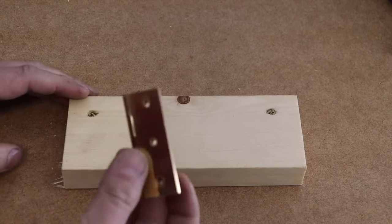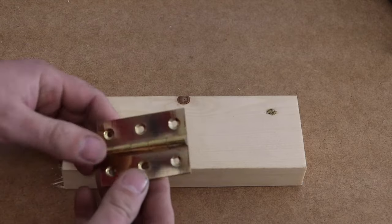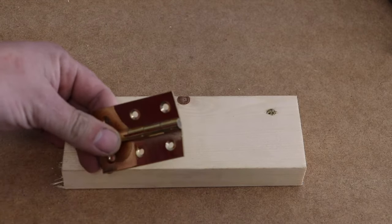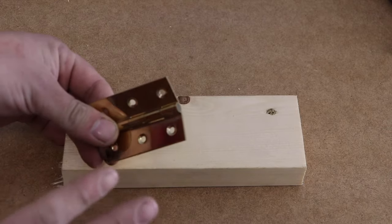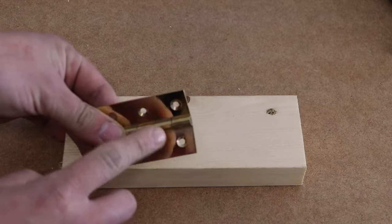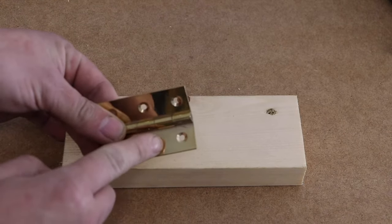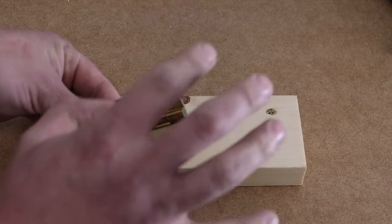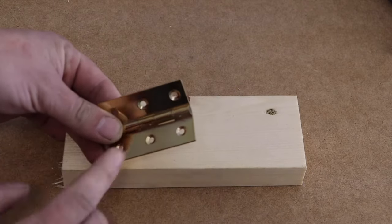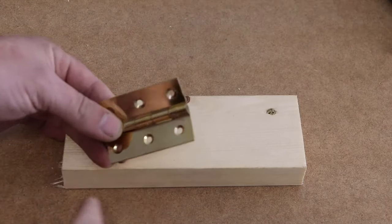So what we want to do is take our hinge and just open it up. Now you're going to hear me using a few different references while we're going through this. So just so you know, these two sections here are called the leaves of the hinges, and that's the knuckle, as in you know, knuckle on your hands. So yeah, leaves, knuckles.